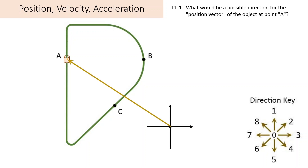The position of an object is represented as an arrow pointing from the origin of a coordinate system to the object of interest. I'm showing a bead that's able to move freely on the track. So we could easily have, with the choice of coordinates, option 8. Arrow 8 most closely represents this arrow from the origin to the object at point A in terms of direction.